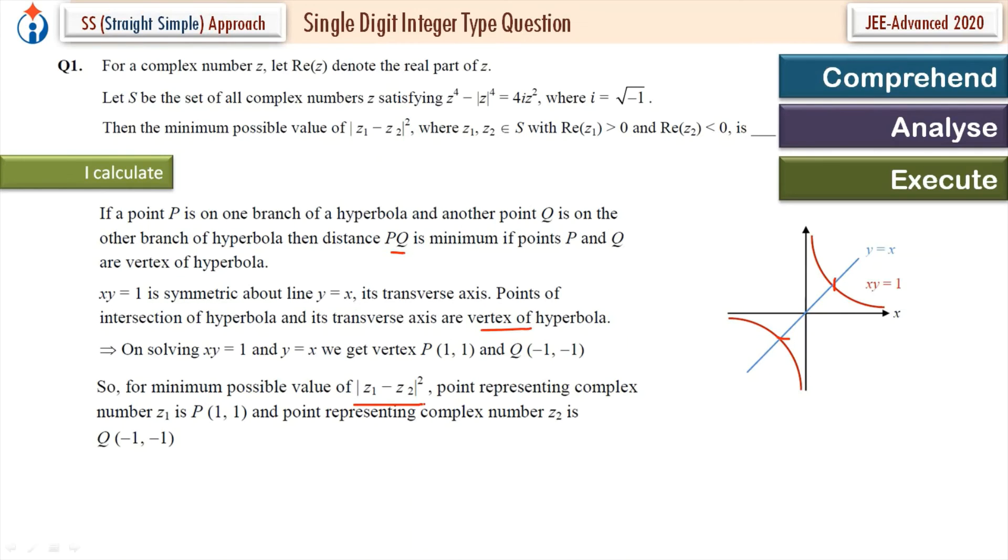So minimum distance of this, minimum possible value of this will be minimum distance between them and the square of that. So we just use the distance between them. We get the answer. PQ square is equal to 8.